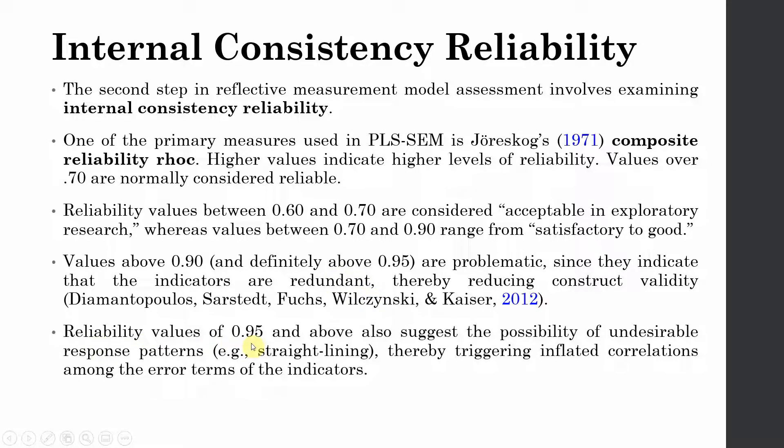Reliability values of 0.95 or over suggest the possibility of undesirable response patterns, e.g., straight lining, thereby triggering inflated correlations among the error terms of the indicators. Now there is a pattern that you do not require in your responses. For example, straight lining would mean that the respondents have selected one single response for each of the indicators, like they have selected strongly agree for all the indicators in your questionnaire.